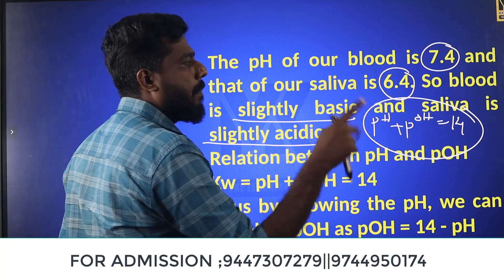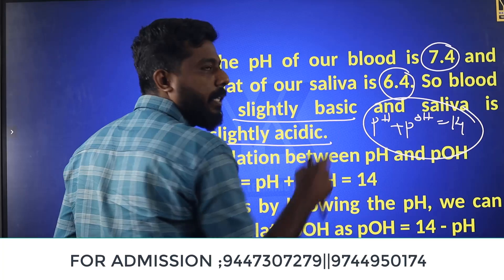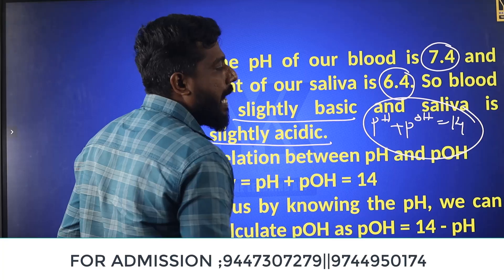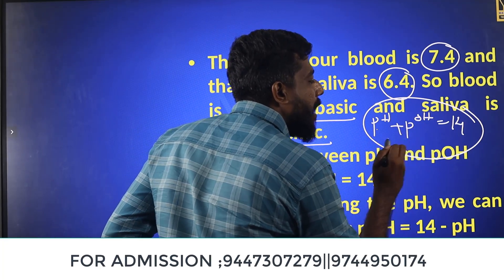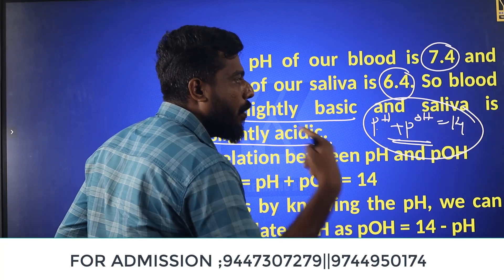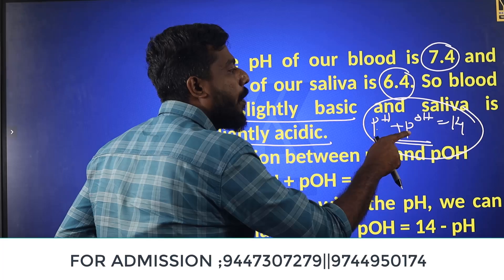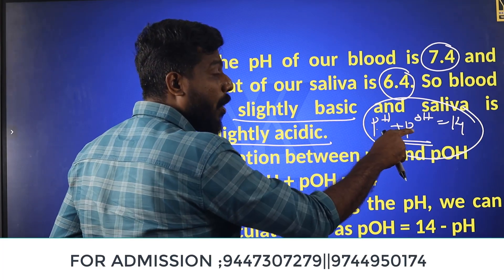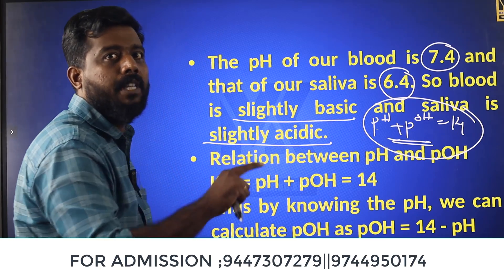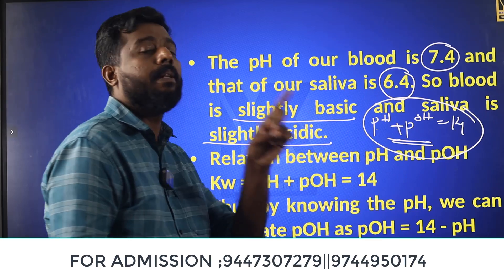If pH is 5, then pOH equals 14 minus 5, which equals 9. Because pH plus pOH equals 14, if pH is 5 then pOH is 9. Let's verify: pH plus pOH equals 5 plus 9 equals 14. Correct.